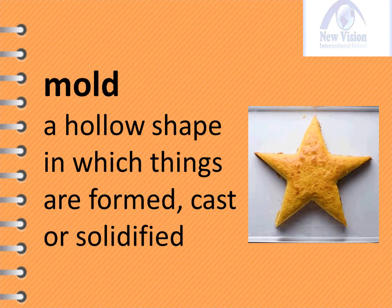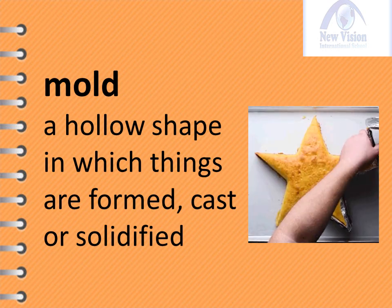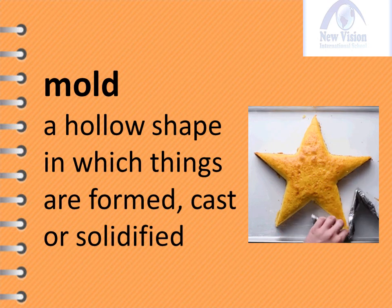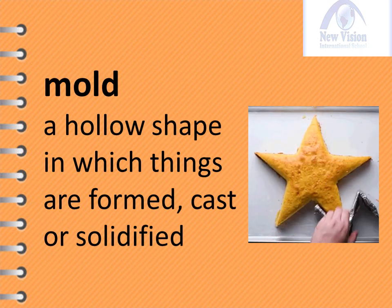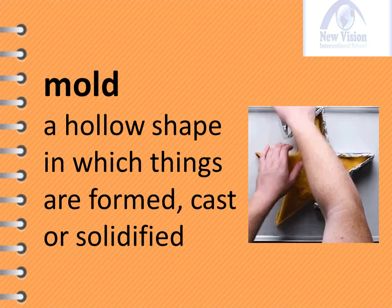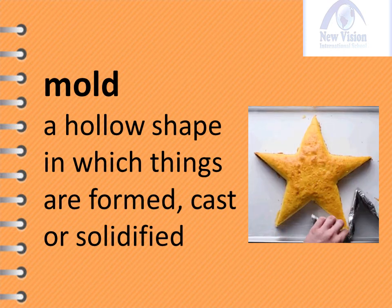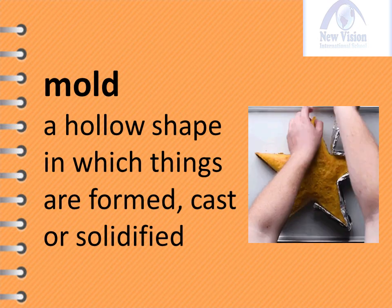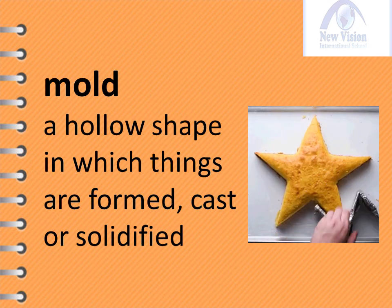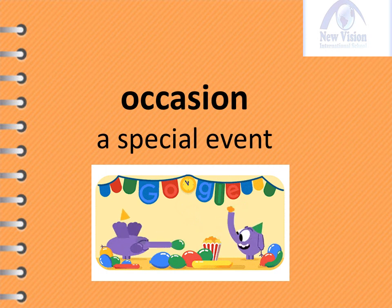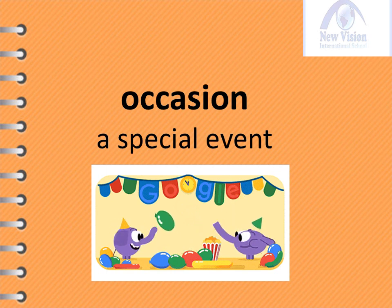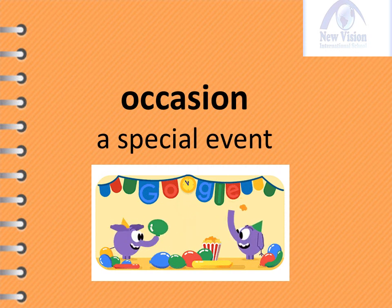Our next word is 'mold.' A mold is a hollow shape in which things are formed, cast, or solidified. Sample sentence: The mold has the exact star shape for the cake. Then we have the word 'occasion.' Occasion is a special event. Sample sentence: There will be a party to celebrate the occasion.